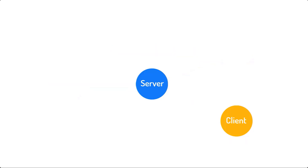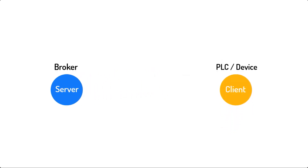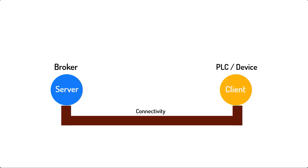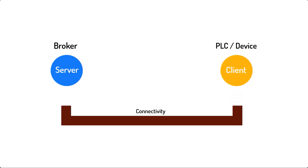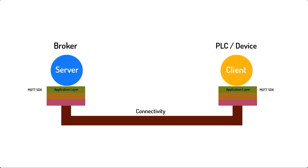Let's zoom into a typical communication session between an MQTT client and server. For these two to successfully connect and communicate with each other, there are certain communication technologies that need to be present, and they are stacked up in layers. The first layer is what your PLC software would interact with, and this layer comprises software libraries that know how to convert your PLC message into an MQTT packet.